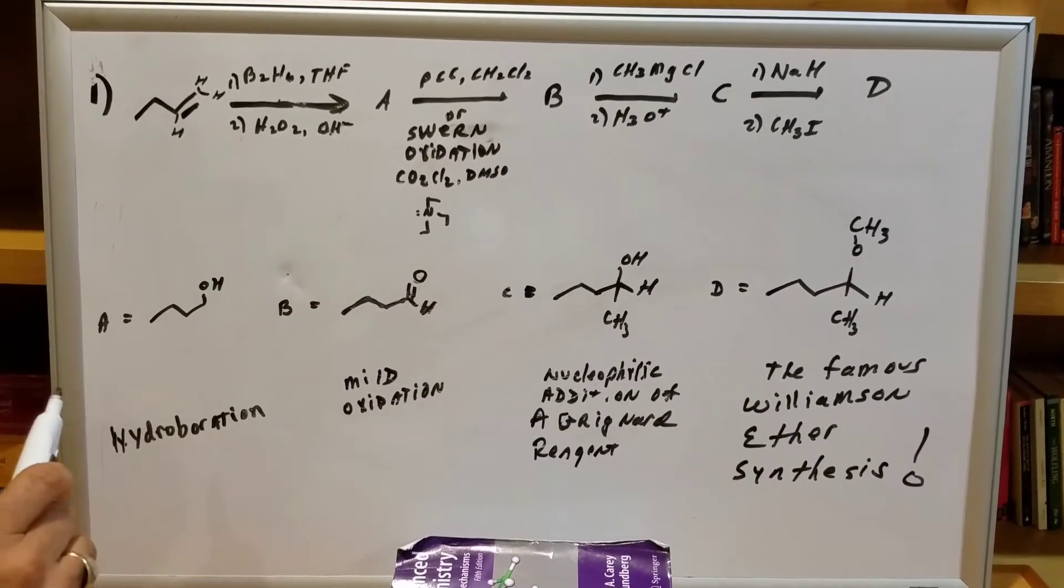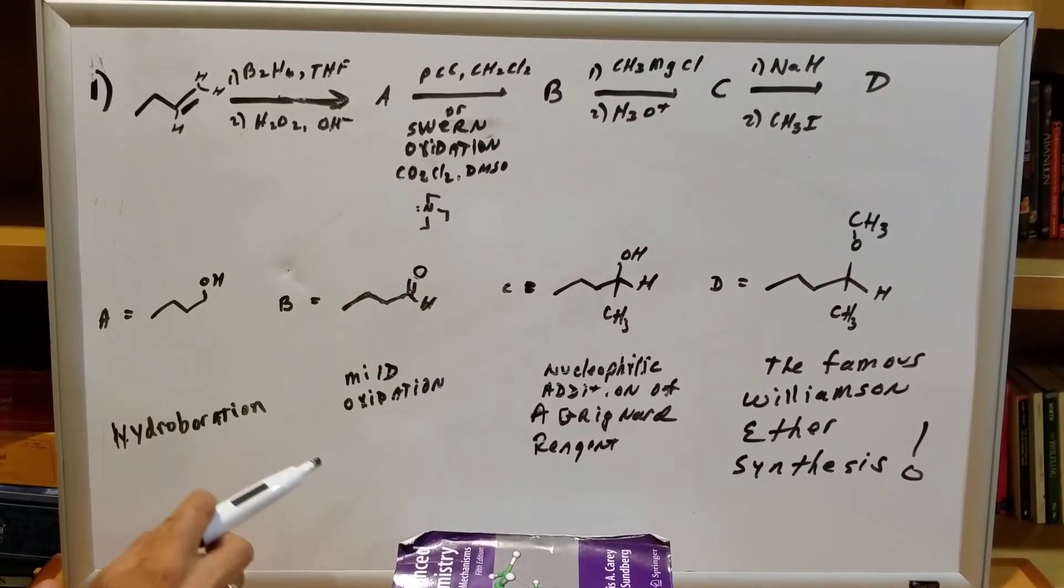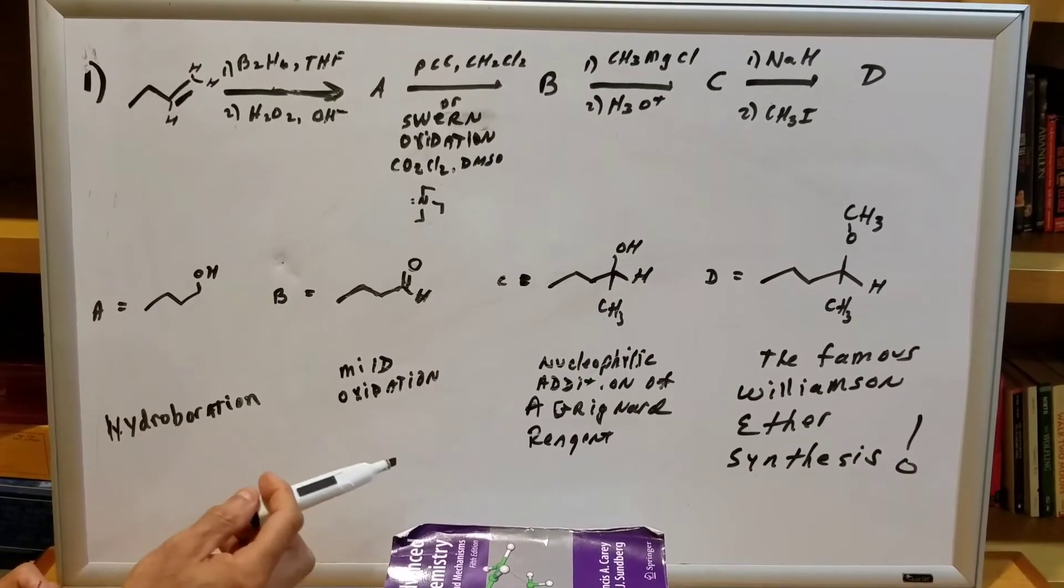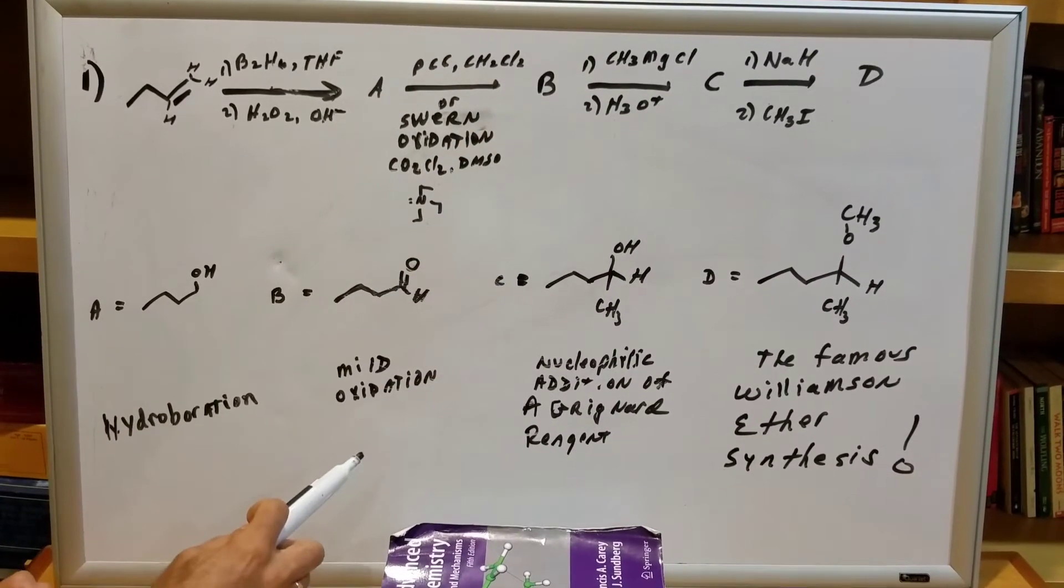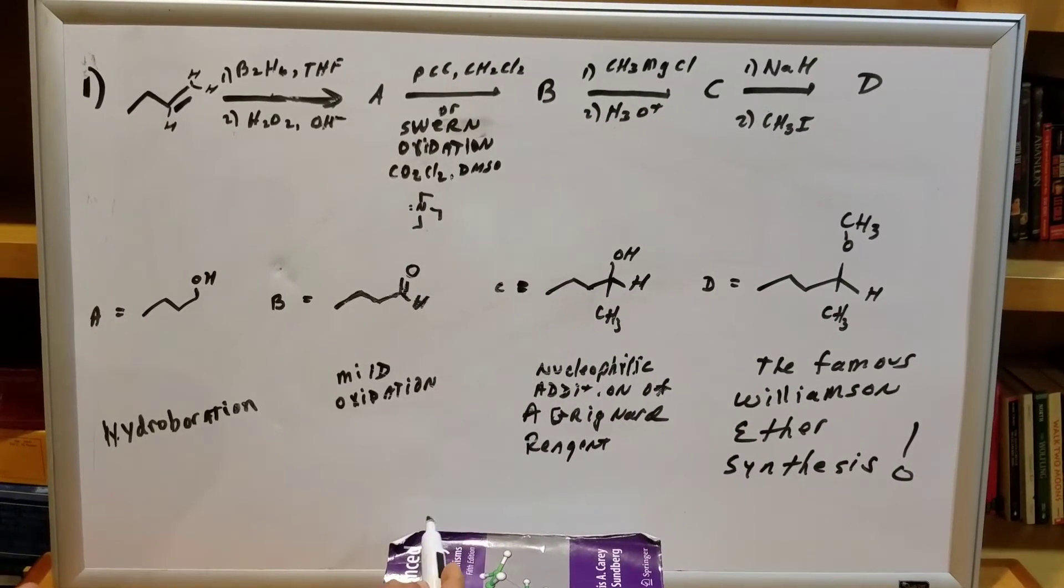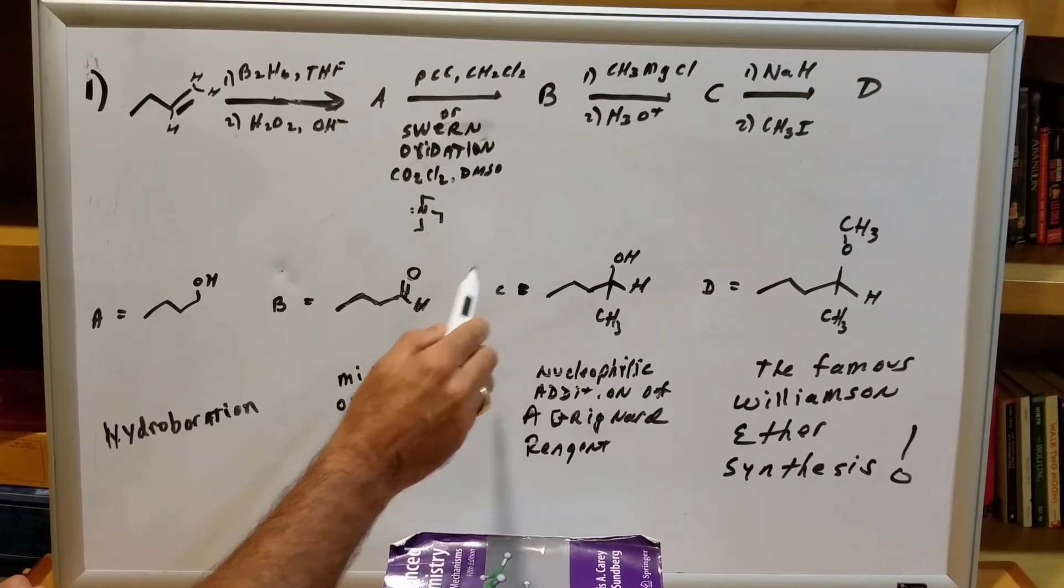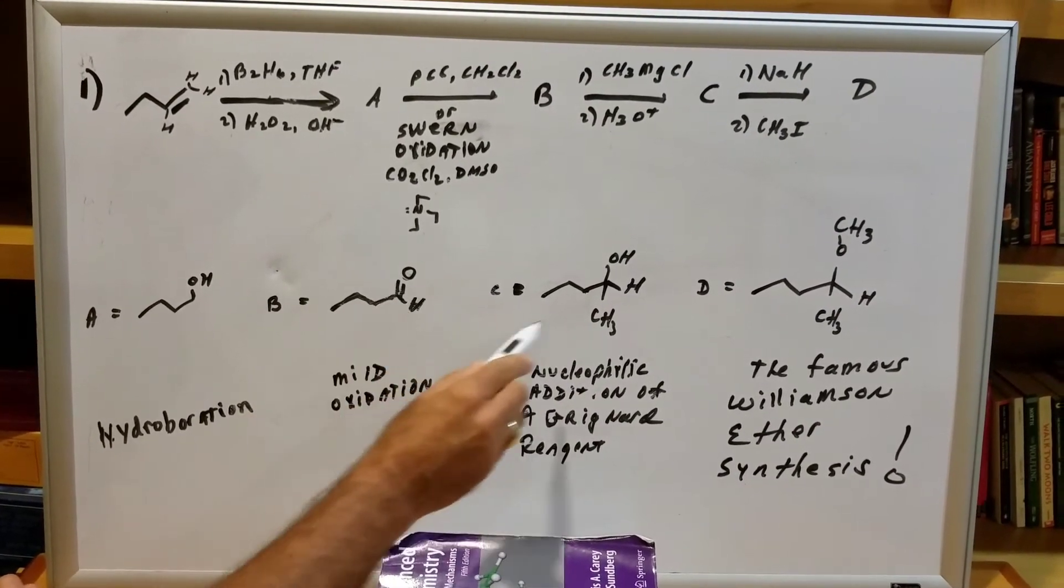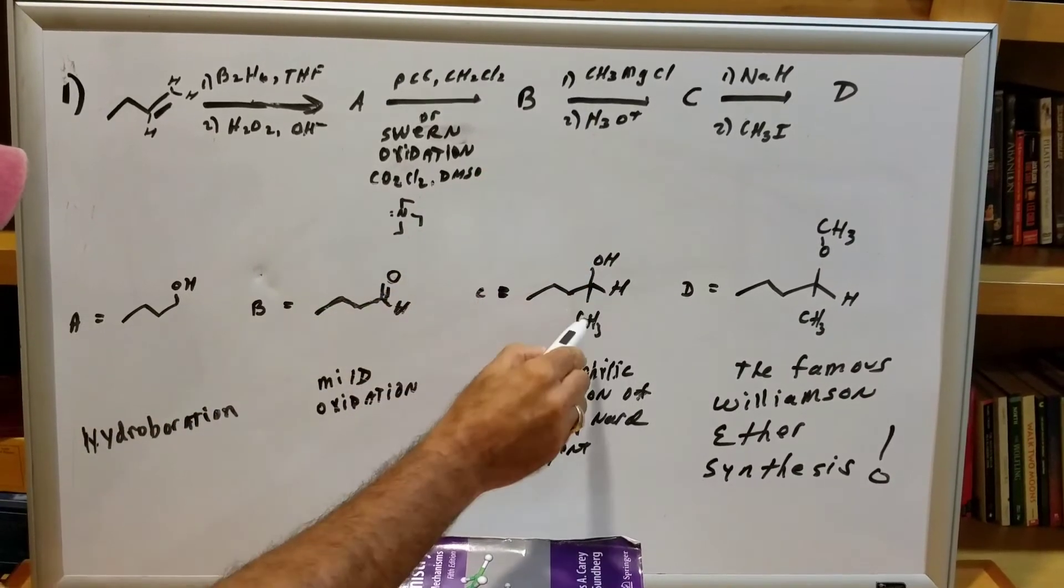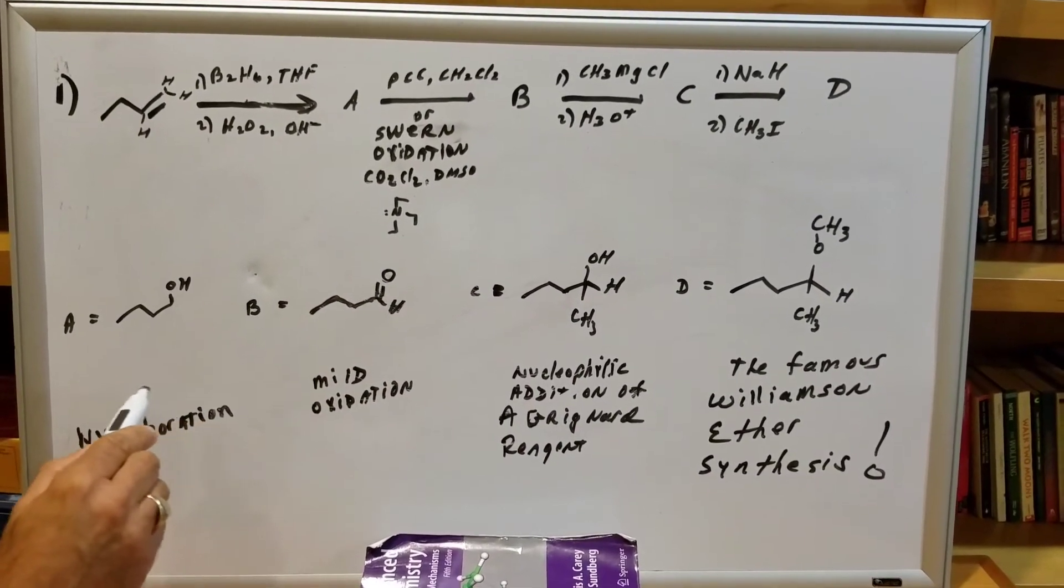Once I got the aldehyde, then I do a Grignard. Very important reaction for a DAT. Aldehydes and ketones, as you can see, do what's called a nucleophilic addition reaction. In this nucleophilic addition reaction, the double bond O became an OH. We added on the R group. Here, the R group is a methyl from the Grignard, and we produce an alcohol.